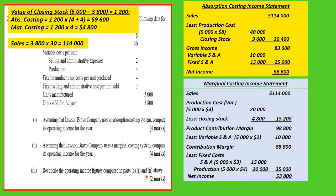Now the question asks us to reconcile the operating income figures. That is, we need to account for the difference between the absorption costing income of $58,600 and the marginal costing income of $53,800. This is something you need to know in order to answer that part of the question.